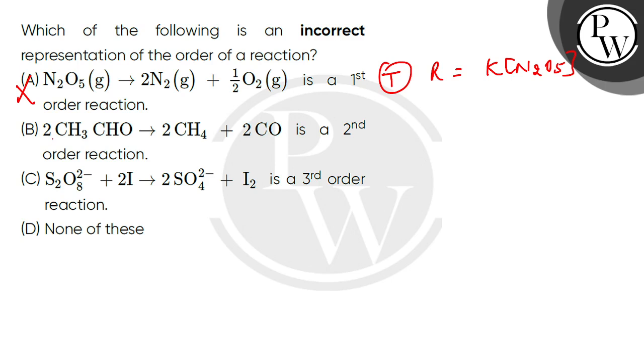Second, two molecules of CH3CHO decompose to two molecules of CH4 and two molecules of CO. This is stated as a second order reaction. This is true. The rate depends on the concentration of CH3CHO to the power of two. This is true, so this is not the answer.